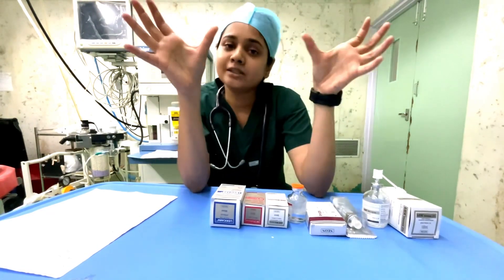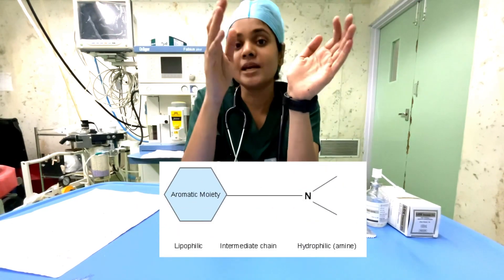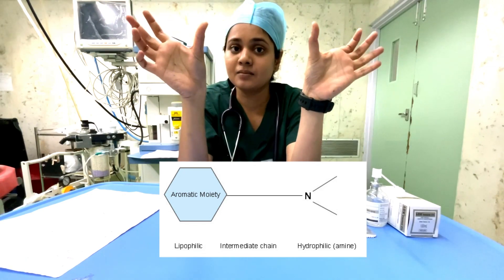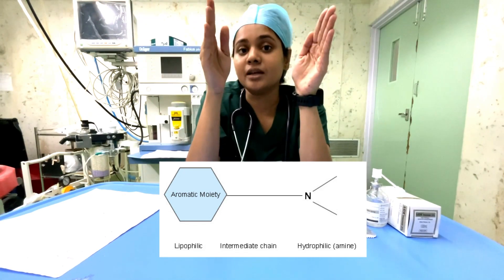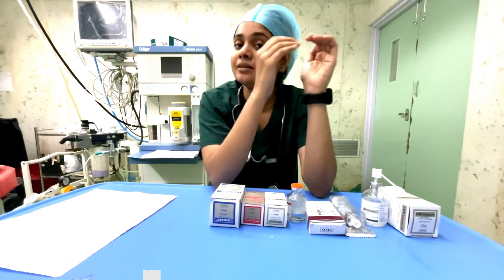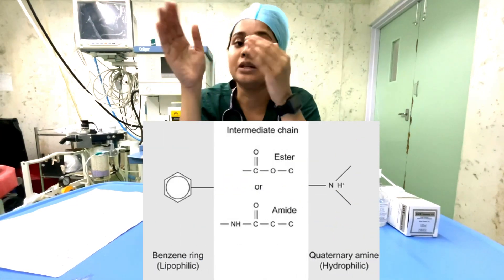If you look at the chemical structure of a local anesthetic, we have an aromatic end, an intermediate chain which links the aromatic end to a tertiary amine end. Depending on the intermediate chain, we have two broad categories of local anesthetics: it could either be an amino amide or it could be an amino ester.